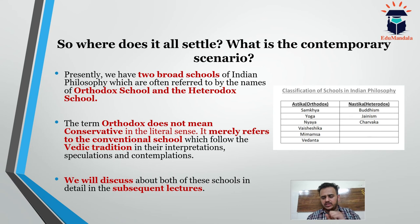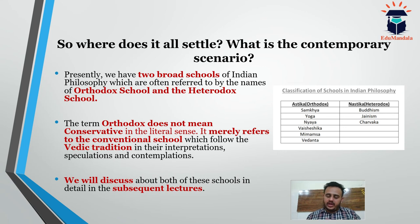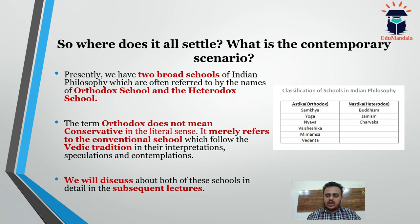Looking at the classification slide, there are two categories: Astika and Nastika. Astika, in literal meaning, refers to one who believes in God, and Nastika refers to one who does not. The Astika orthodox school has six sub-schools: Sankhya, Yoga, Nyaya, Vaisheshika, Mimansa, and Vedanta. The Nastika school includes Buddhism, Jainism, and Charvaka. These are the broad schools of contemporary Indian philosophy that developed over a period of 2,000 to 3,000 years.